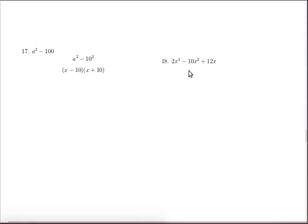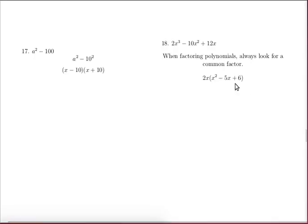The next problem, remember always look for a common factor. So when we're looking at this thing we notice that there's a common factor of x and there's a common factor of 2. So let's do that factoring first. Now the important thing here is to factor completely so we need to look at x squared minus 5x plus 6 and see if that will factor further.